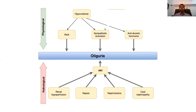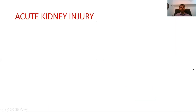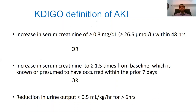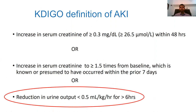So oliguria can happen under normal circumstances when kidney function is normal, because of compensatory mechanisms operating in the body. On the other hand, problems in the kidneys also result in oliguria through pathological conditions leading to acute kidney injury. For AKI diagnosis, you can use a creatinine cut-off or the urine output criterion: reduction in urine output of less than 0.5 ml/kg/hour for more than six hours.